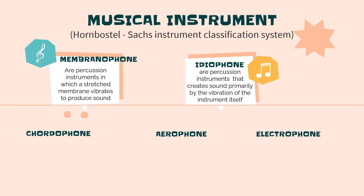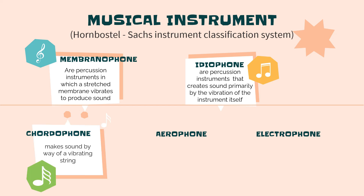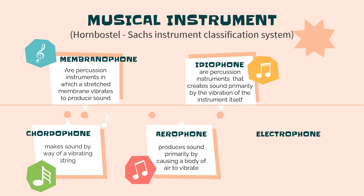Membranophones are percussion instruments in which a stretched membrane vibrates to produce sound. Idiophones are also percussion instruments that create sound primarily by the vibration of the instrument itself. Chordophones make sound by way of a vibrating string. Aerophones produce sound primarily by causing a body of air to vibrate.